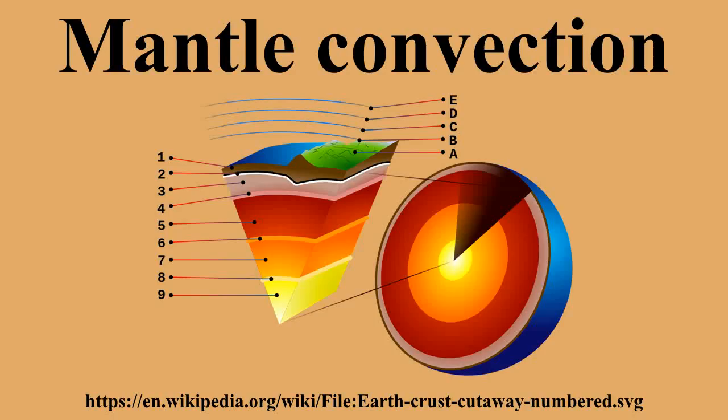Speed of convection: Typical mantle convection speed is 20 mm per year near the crust, but can vary quite a bit. The small-scale convection in the upper mantle is much faster than the convection near the core. A single shallow convection cycle takes on the order of 50 million years, though deeper convection can be closer to 200 million years.